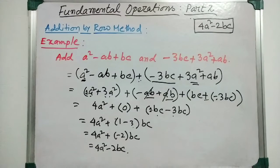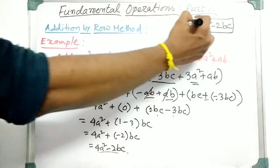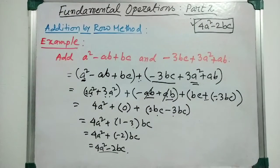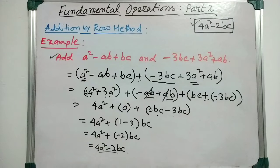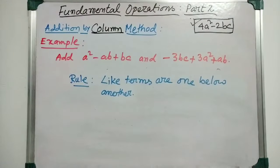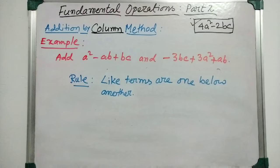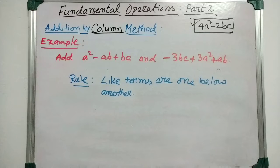Now I have written down this result and I will solve the same problem using the column method. For addition by column method, we have to arrange the given polynomials so that the like terms are one below the other in a vertical column.